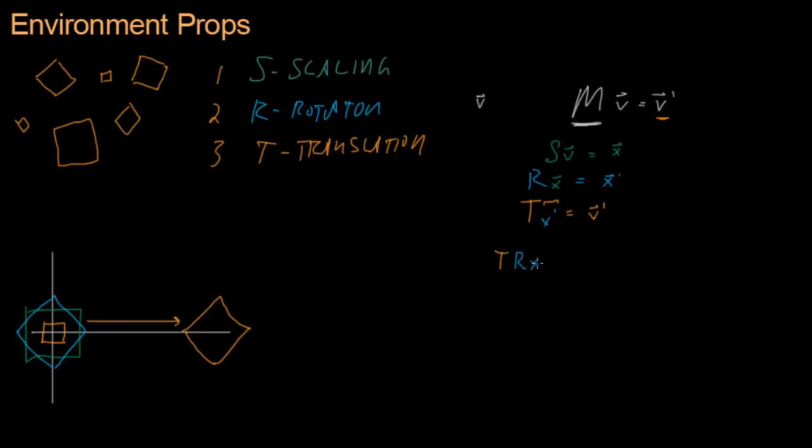That should give us V prime. Now I'm gonna take this X, and this X is equal to SV, so I'm gonna replace this X with SV. That should give us T, R, and then replace the X with S times V, and again that gives us V prime.